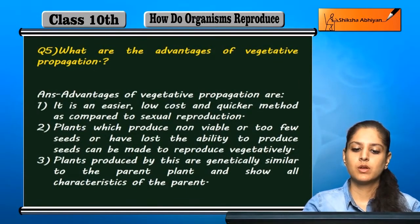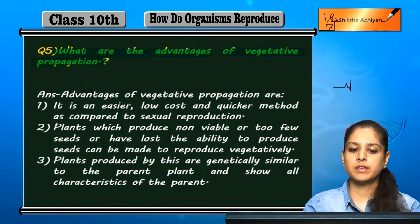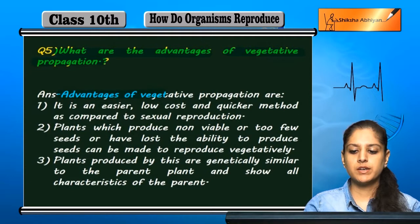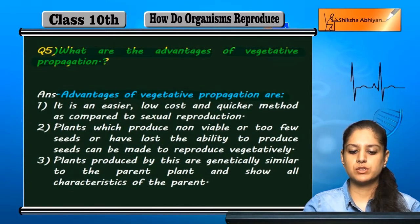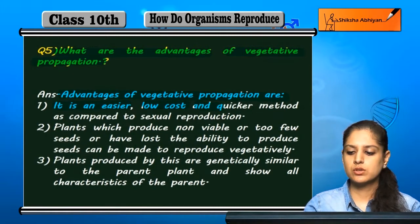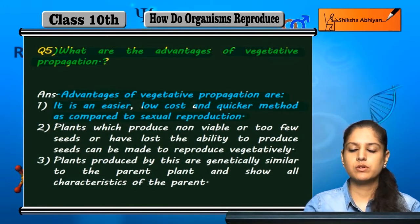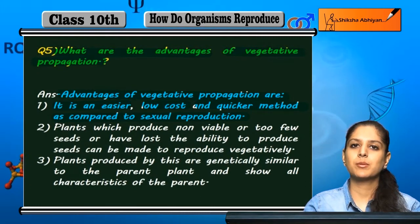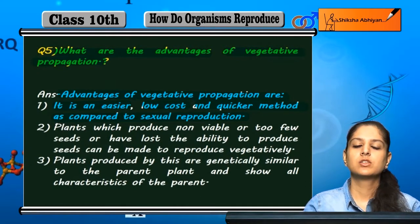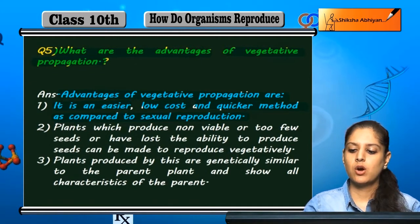Question number 5: What are the advantages of vegetative propagation? This is an easy, low cost, and quick method as compared to sexual reproduction. It is easy and cheap, the cost is less and it is quick.